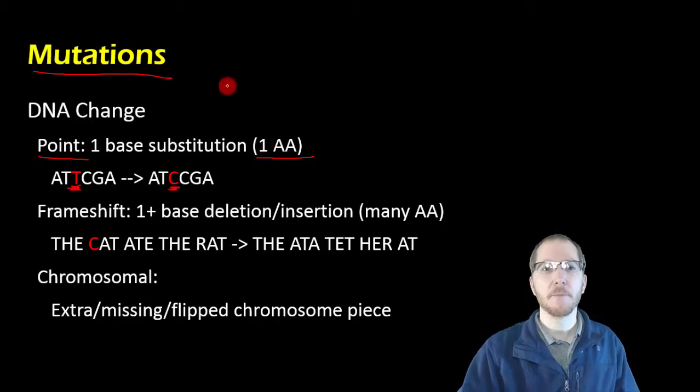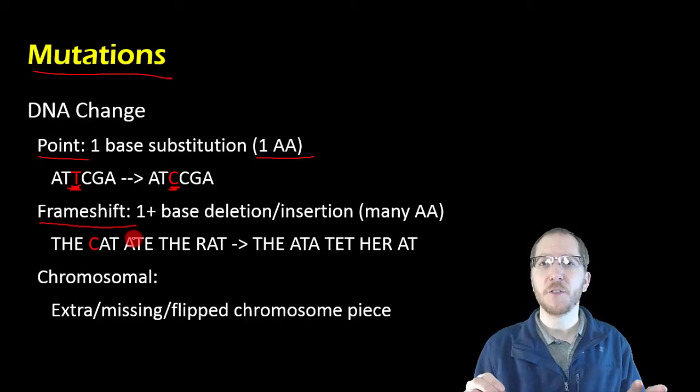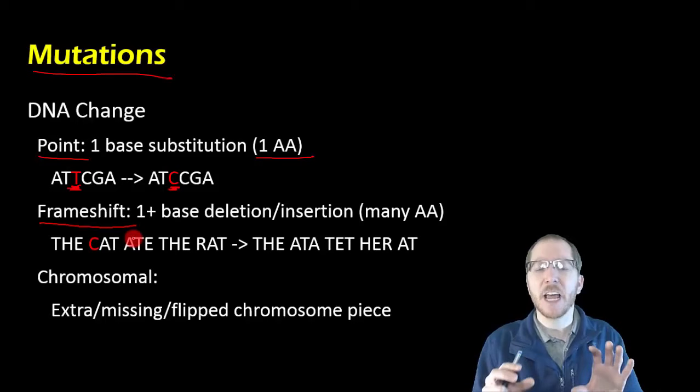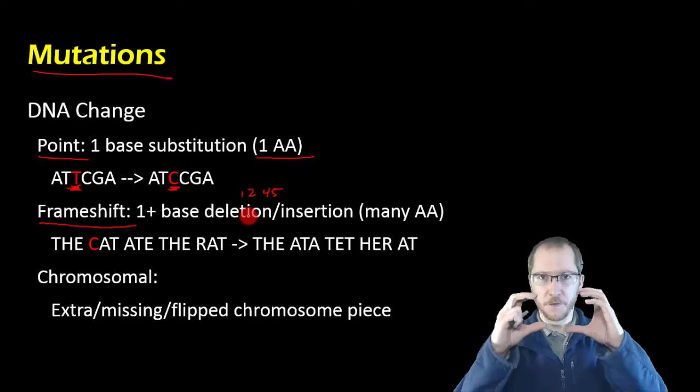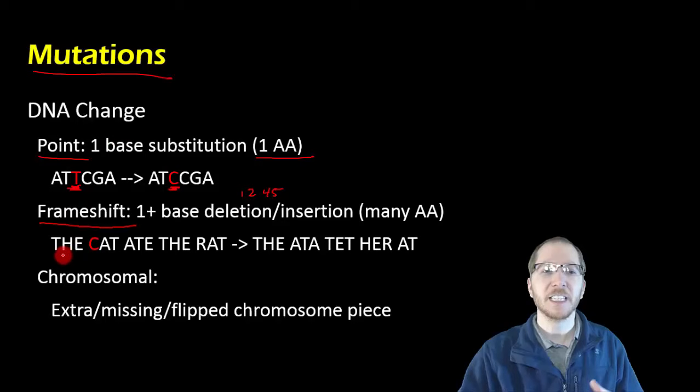So some of the more severe ways we can screw things up is the first one being a frameshift. This is where we're adding one or more bases, but typically not multiples of three. If you add in like three nucleotides, because you just add one amino acid, that's not going to be as damaging. But especially if you add in like one or two or four or five amino acids, or delete them, what you end up doing is screwing up the reading frame of how we do this. So as an example, we normally have this idea of reading in codons, reading in threes, the cat ate the rat.